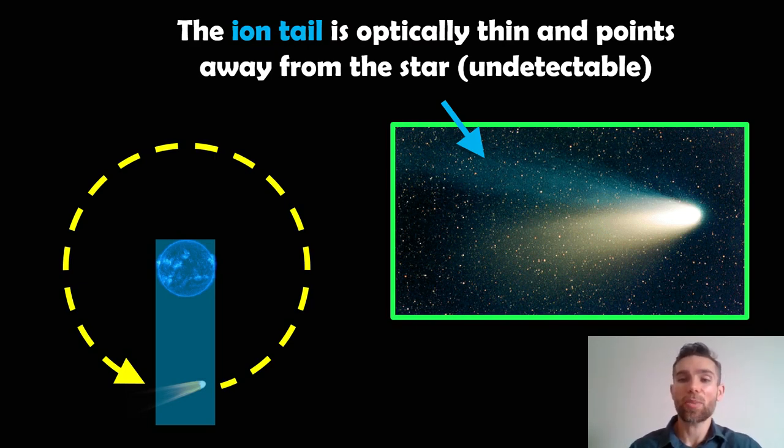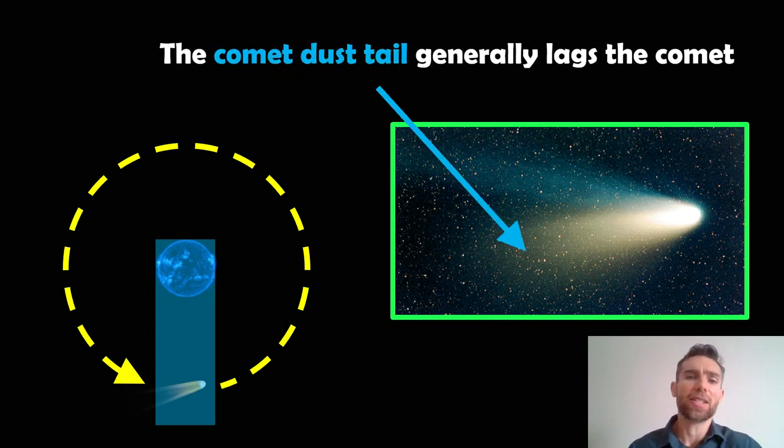So a comet is typically made up of an iron tail and a dust tail. Now the iron tail is optically thin and it points away from the star because it interacts with the stellar wind because it's charged particles. So it always typically faces away from the star, and because it's quite optically thin, it's not very dense. With regards to the transit method, we're not really going to detect that part. What we do detect though is the dust tail. So the dust tail is larger particles, more like dust, and these actually lag the comet in its orbit. So if the comet goes across the star, we would expect the tail to always lag it. And we would see this because this would be optically thicker, it would block out more light.